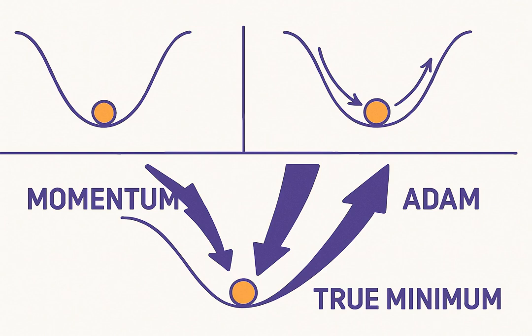But gradient descent isn't perfect. It can get stuck in local minima — like a valley that isn't the lowest one. It can also oscillate if the learning rate isn't set right. That's why techniques like momentum, the Adam optimizer, and adaptive learning rates are used.